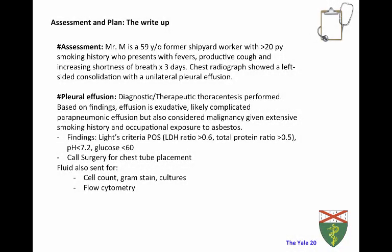Now for the assessment and plan write-up. This hypothetical patient, Mr. M, is a 59-year-old former shipyard worker with a greater than 20-pack-year smoking history presenting with fever, productive cough, and increasing shortness of breath times three days. Chest radiograph shows left-sided consolidation with a unilateral pleural effusion. Based on diagnostic/therapeutic thoracentesis, the effusion is exudative, likely a complicated parapneumonic effusion, with malignancy also considered given smoking history and asbestos exposure. Light's criteria showed LDH ratio greater than 0.6, protein ratio greater than 0.5, pH less than 7.2, and glucose less than 60. Surgery was called for chest tube placement; fluid sent for cell count, gram stain, culture, and flow cytometry.